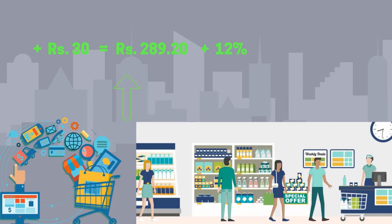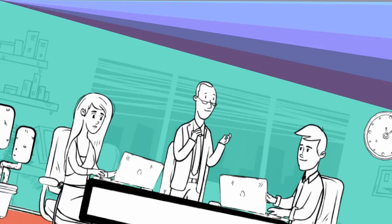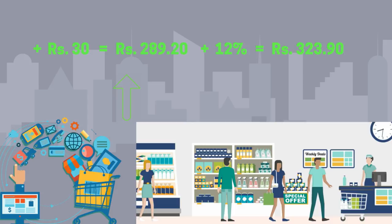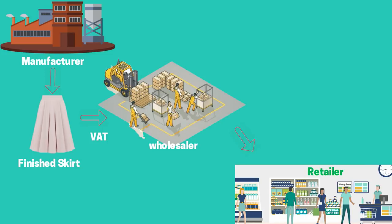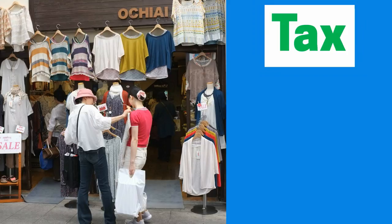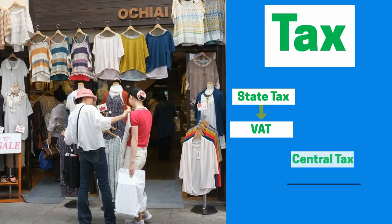Now let's look at the taxes applicable at different stages. The manufacturer pays excise on the finished skirt, the wholesaler pays VAT, and the retailer pays CST. This is how the cascading effect works — at each stage, tax paid becomes a cost in the next stage, so at the final consumption stage, the consumer has paid taxes on tax. You must understand that VAT is a state tax, while both CST and excise are central taxes, and under current laws, central and state taxes cannot be knocked off against each other.